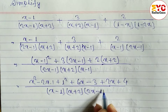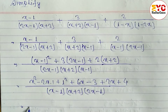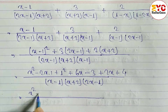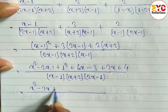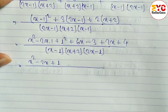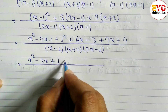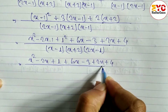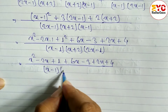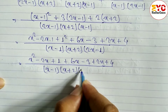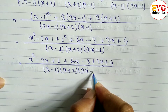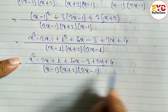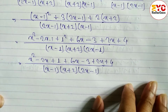So the numerator becomes x squared minus 2x plus 1 plus 6x minus 3 plus 2x plus 4, over (x minus 1)(x plus 2)(2x minus 1). Now we arrange and combine like terms.